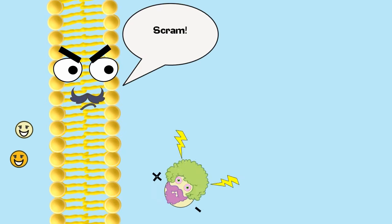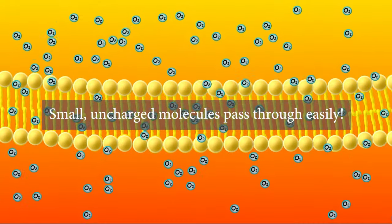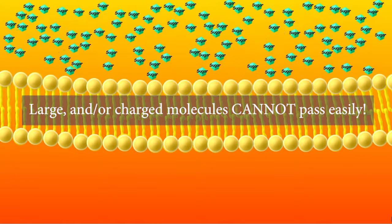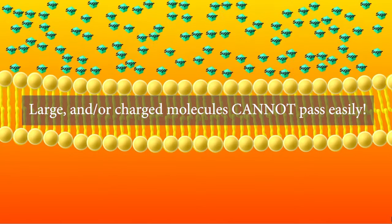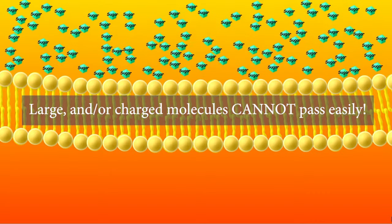So oxygen passes through easily because it's both small and nonpolar, or uncharged. Sugar, on the other hand, is larger and polar, meaning that it has partially charged regions. For this reason, it cannot pass through the phospholipid bilayer of the membrane.